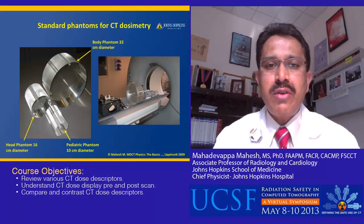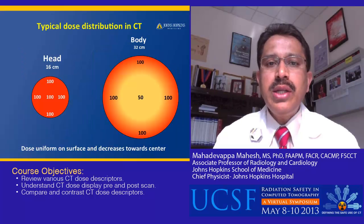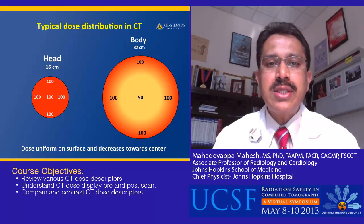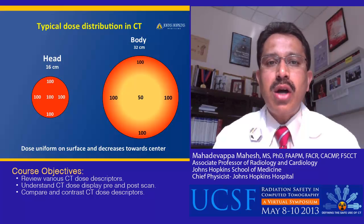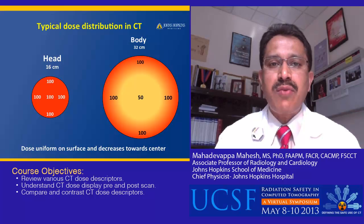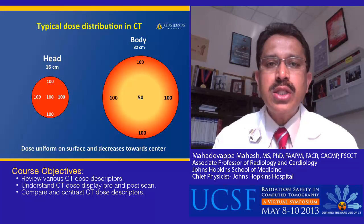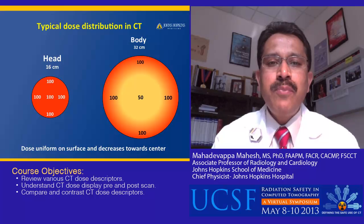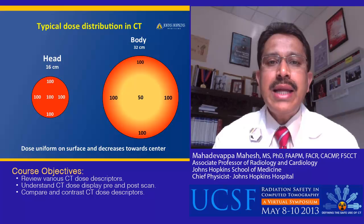We also use a 10-centimeter diameter lucite phantom called the pediatric head phantom. When you look at the dose distribution in this phantom, if the object size is small, the measurement done on the surface is the same as the measurement done at the center. However, if it is the larger phantom such as the body phantom, the surface dose is almost twice that of the center. Because of this variation, the measurement done at different locations of the phantom is variable, and that is accounted for in the development of the CT dose descriptors.